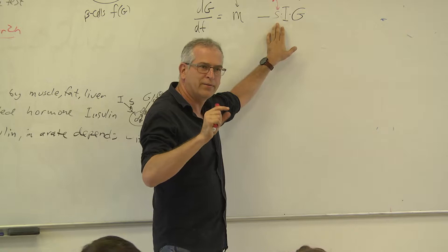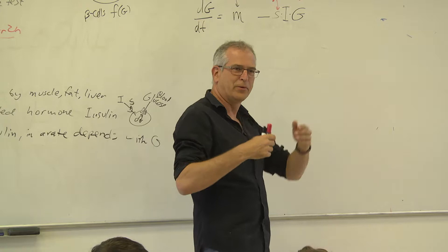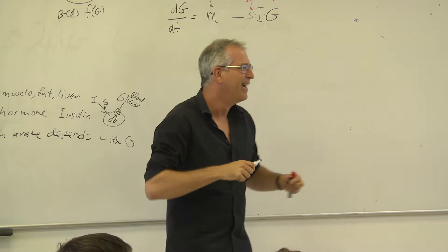Why is it different than what you just explained? The question was how I measure S, the parameter S. The process seems the same - here you eat a meal. It is the same except instead of inserting glucose, you insert insulin. So it's a different way to perturb the same equation.